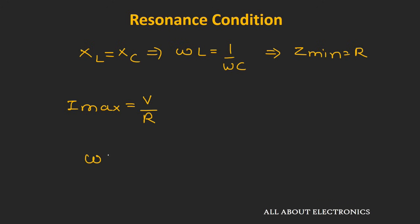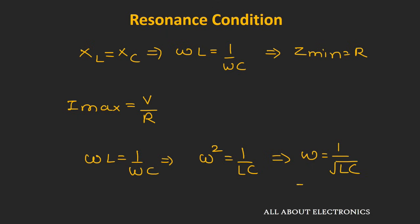From the resonant condition ωL = 1/(ωC), we can write ω² = 1/(LC), or ω = 1/√(LC). This frequency is known as the resonant frequency of the circuit. In terms of regular frequency, we can write it as f = 1/(2π√(LC)). This is the resonant frequency for the given circuit.